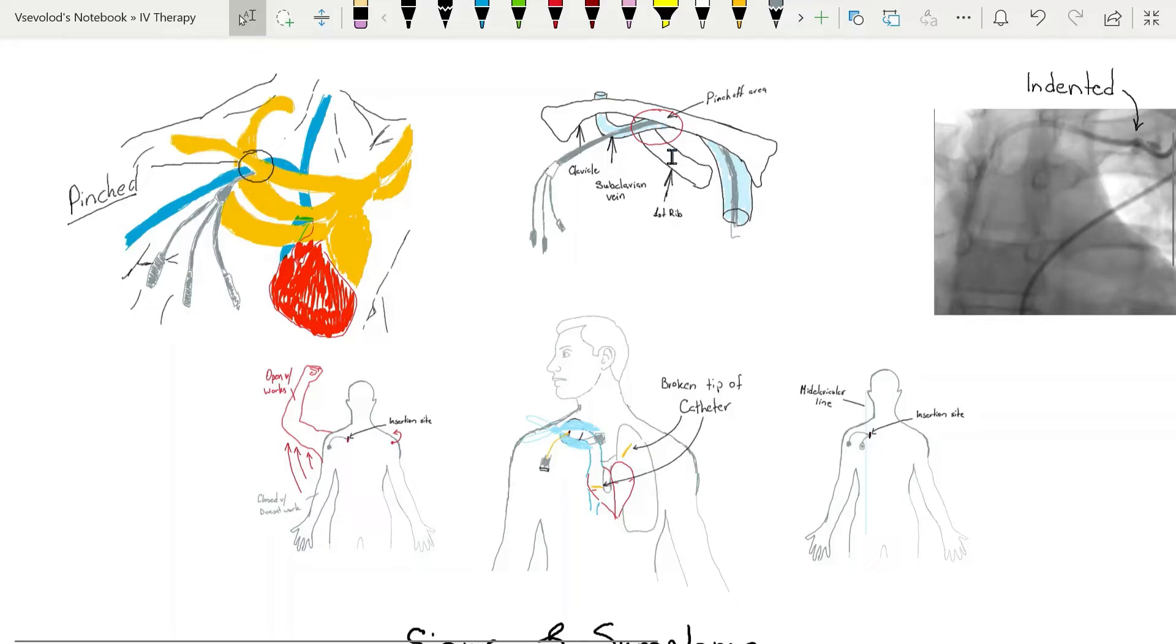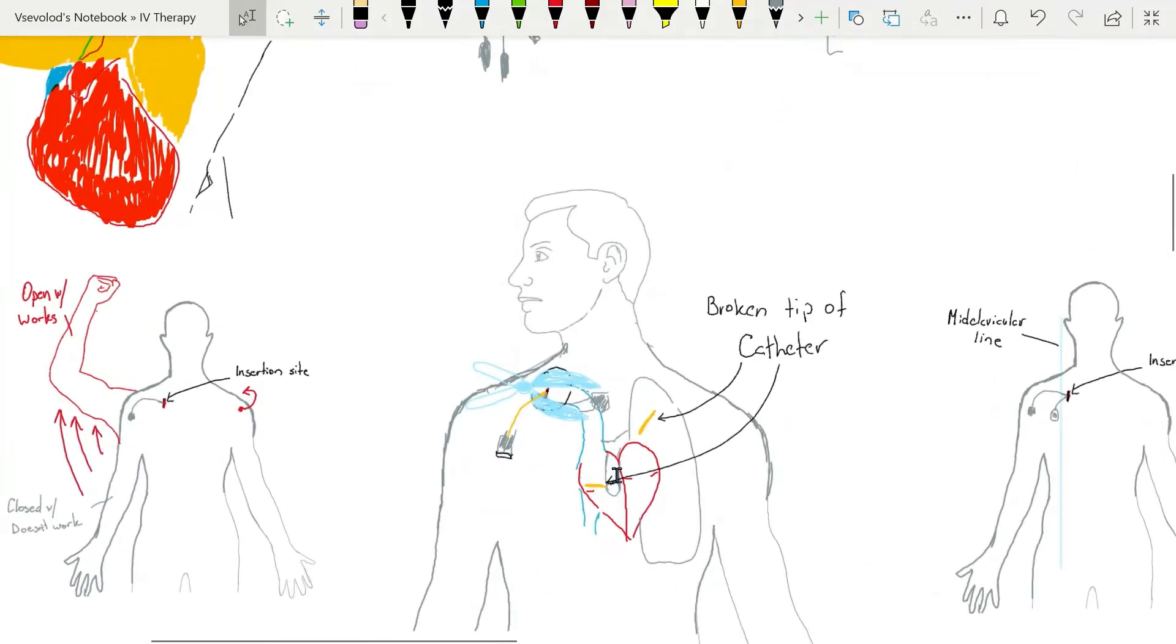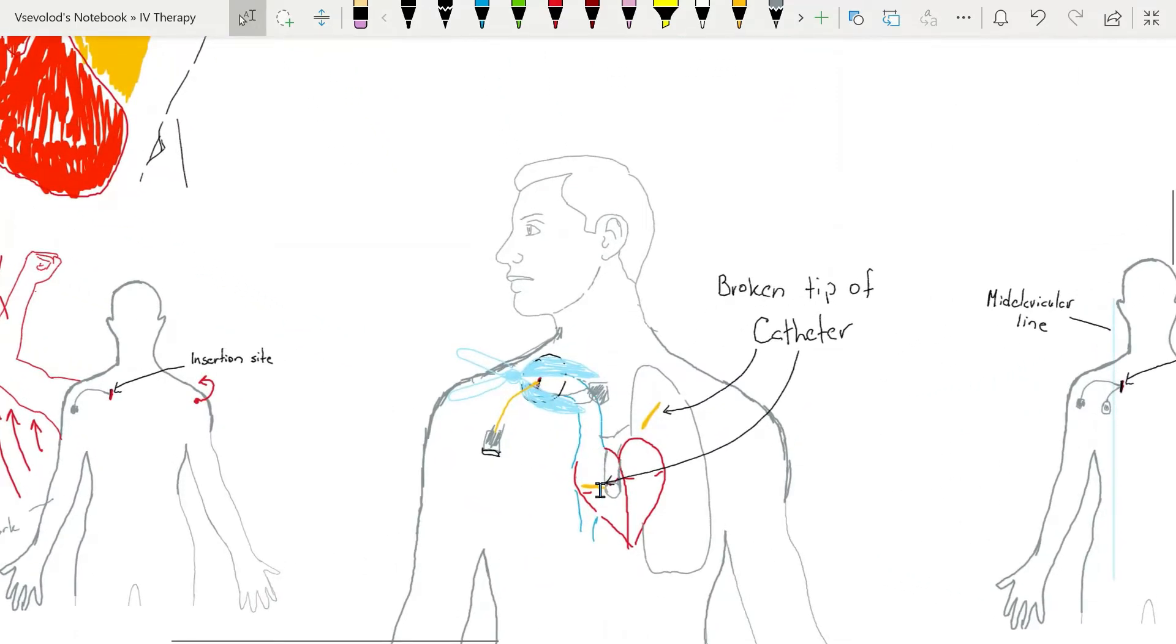Catheter compression causes intermittent or permanent catheter obstruction and because of the scissoring effect can result in catheter tearing, transection and catheter embolism, most often to the right heart or pulmonary artery.